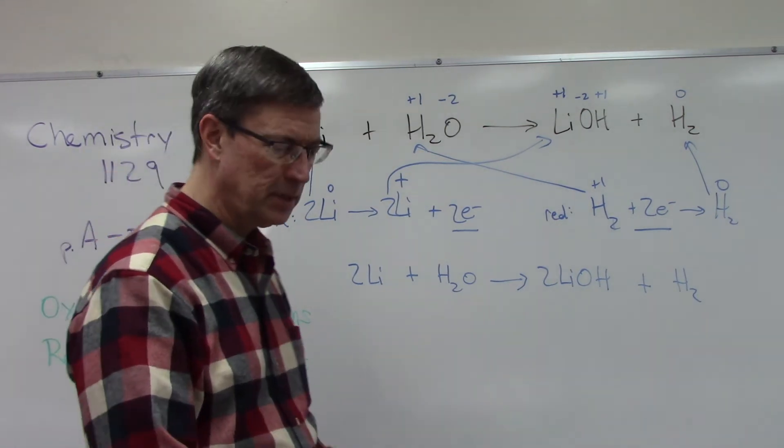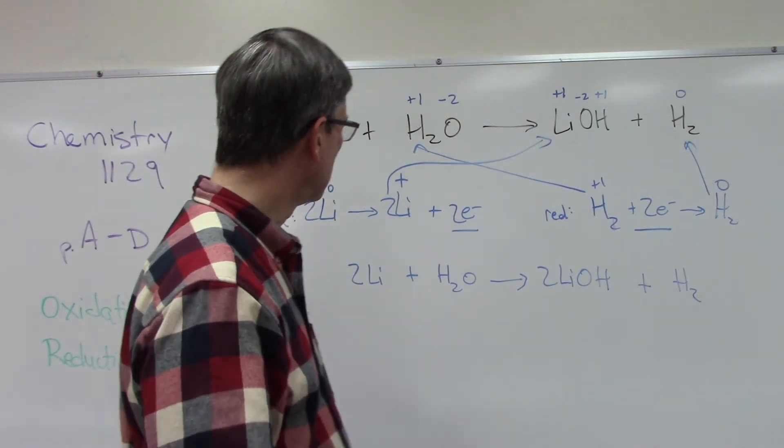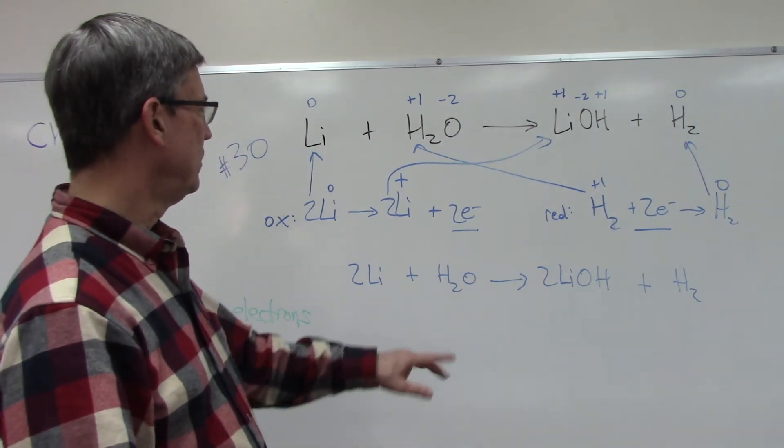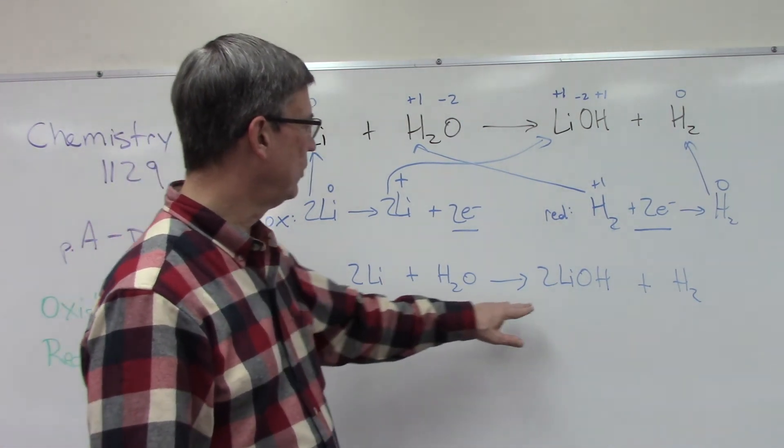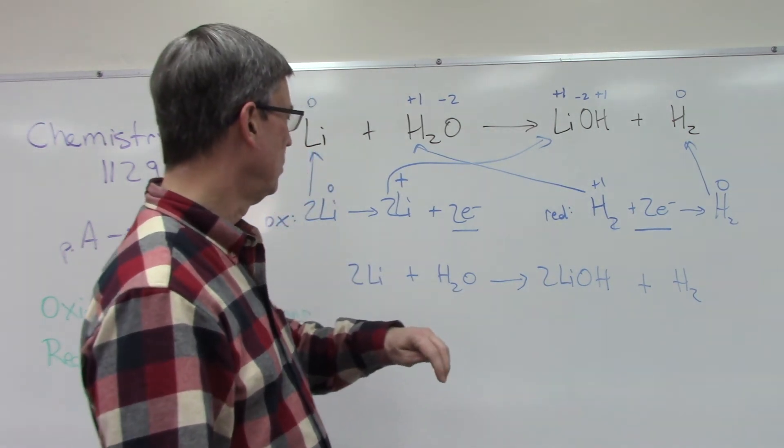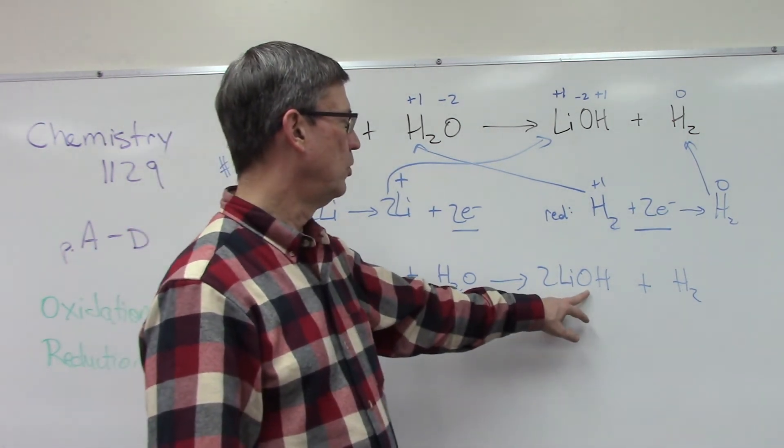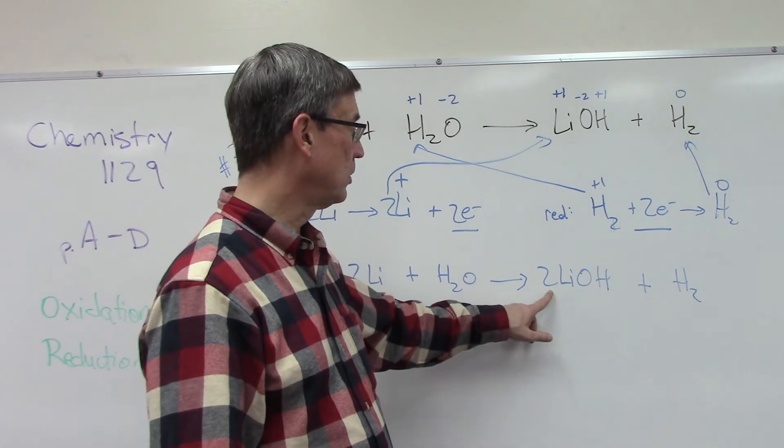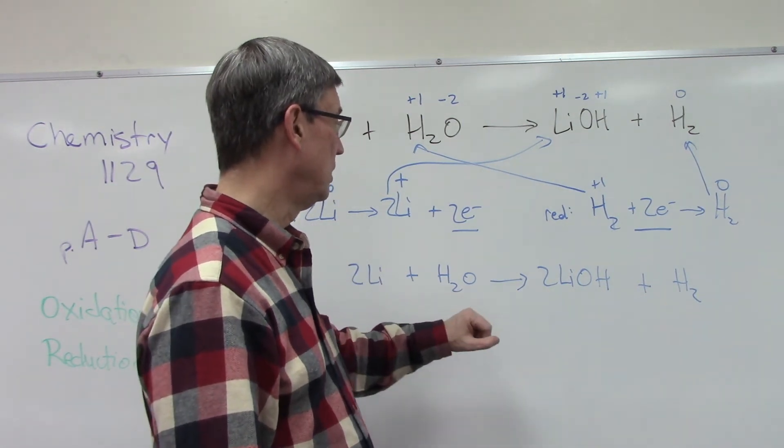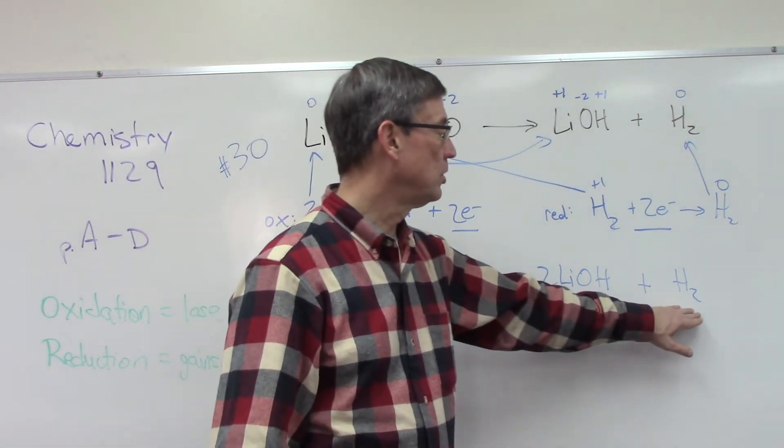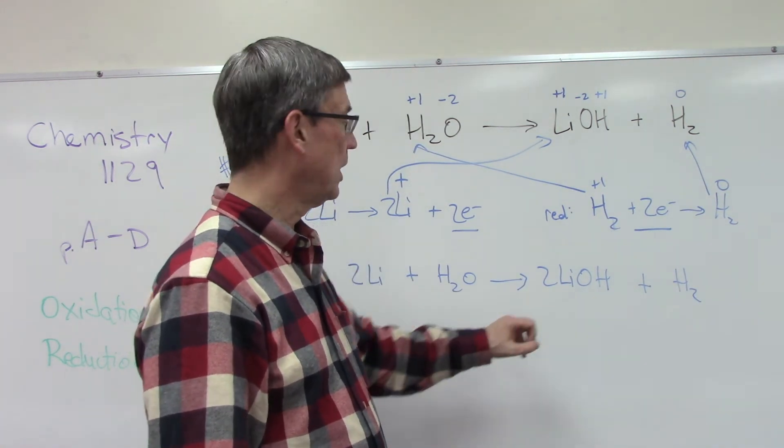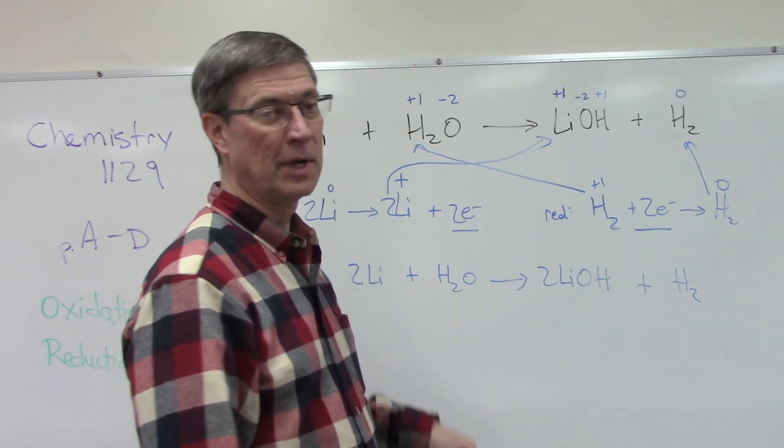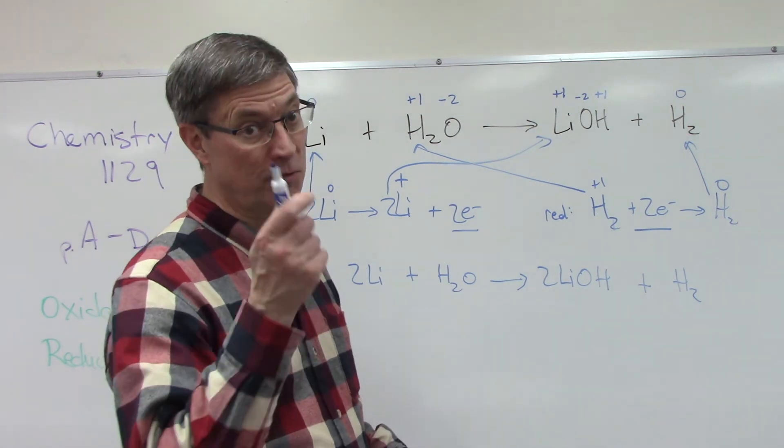And then the last step is to compare the coefficients and see if everything balances. We have two lithium, we have two lithium. How many total oxygen do we have? We have two on this side because of this coefficient but only one here. On this side, we have a total of four hydrogen, and only two on this side.